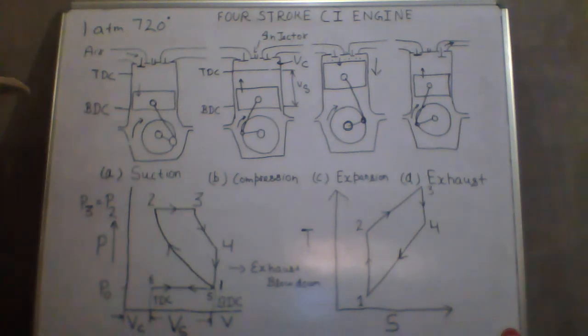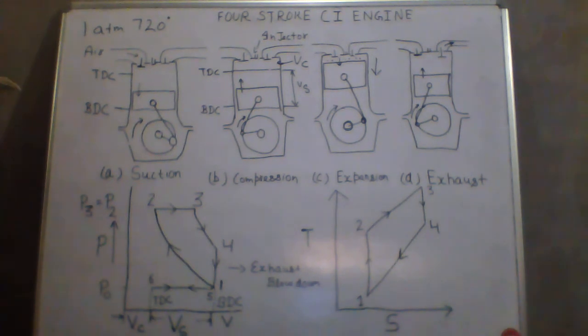This completes the four-stroke CI engine working, pressure-volume diagram, and TS diagram. Next, we come to the two-stroke spark ignition engine.